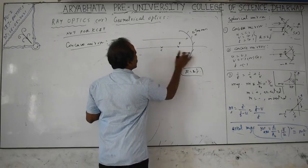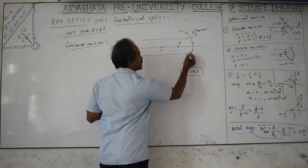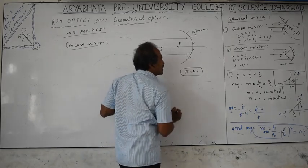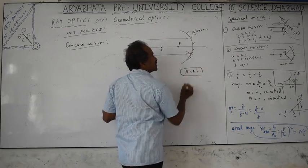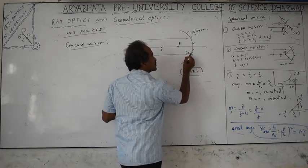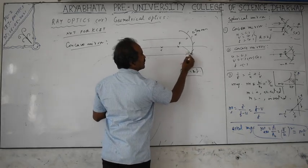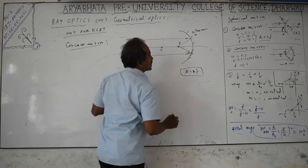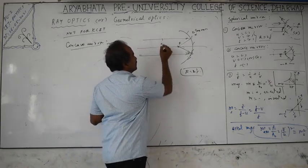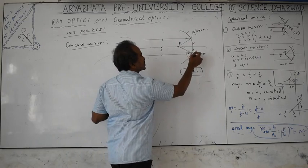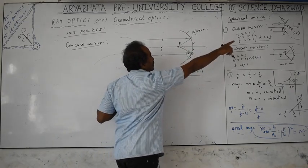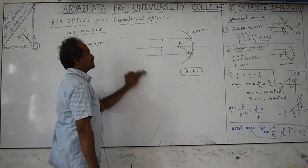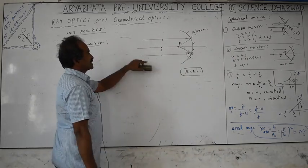For reflection from curved surfaces, draw a tangent to the surface where light falls, take the normal to that tangent, and apply the law of reflection: angle of incidence equals angle of reflection. After reflection from a concave mirror, the reflected rays pass through the principal focus. For a convex mirror, parallel paraxial rays after reflection appear to come from the virtual focus behind the mirror.